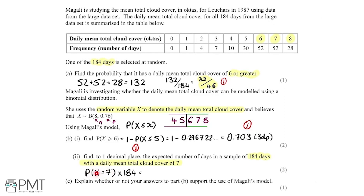Using the binomial PD menu in the calculator, setting X equal to 7 with n equal to 8 and p equal to 0.76, we get 0.2811... Multiplying by 184 gives 51.7385..., which equals 51.7 to one decimal place. We get one mark for recognizing we need to multiply by 184, and a second mark for the final answer of 51.7.